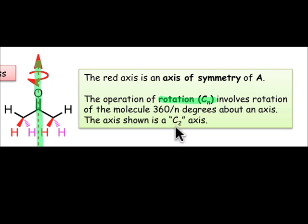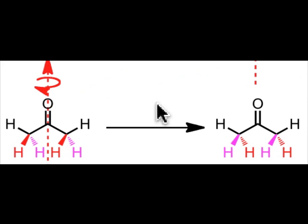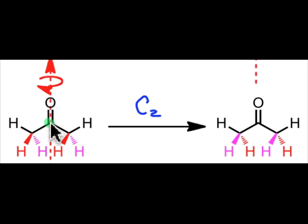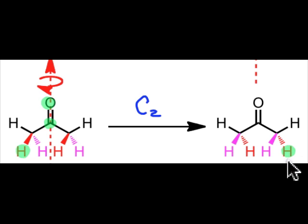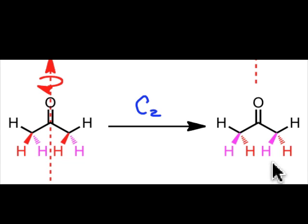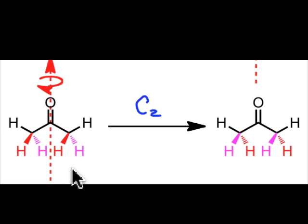If we rotate the molecule by 180 degrees, that's a C2 axis. Let's apply the two-fold rotational axis to the molecule of acetone shown here. Atoms that lie on the axis don't move at all. All of the red atoms will exchange with the magenta atoms — for example, the atom on the left coming out colored red will spin around to the right-hand side and head to the back. Since the new structure generated upon application of the C2 axis is indistinguishable from the original molecule, we say that acetone possesses two-fold rotational symmetry.